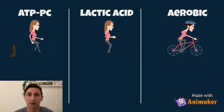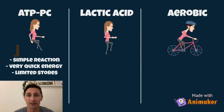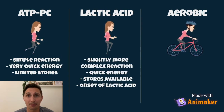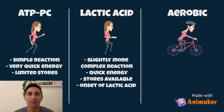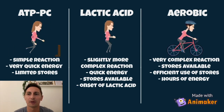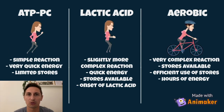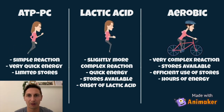Apply this analogy to the three energy systems: the ATP-PC system is like the phone — very quick reaction, quick energy, but limited ATP production. The lactic acid system is like the tablet — still quite quick, lots of glucose stores available, but the onset of lactic acid is detrimental to performance. The aerobic system is like the laptop — a slow load-up because of very complex reactions, but very efficient and capable of providing hours of energy as long as glycogen stores are sufficient.